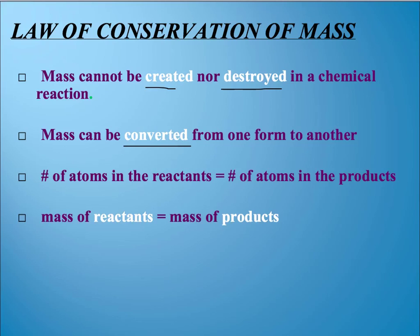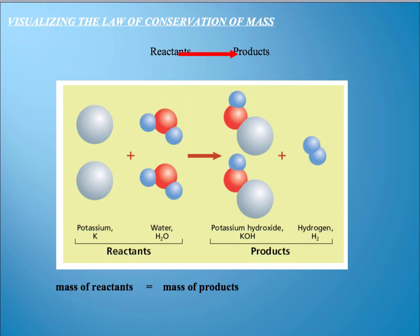And the way you have to do this is add up the number of atoms of each element in the reactants. Remember, reactants means ingredients. And make sure that that's equal to the number of atoms in the products. Remember, the products are what you made, your result. And also, the mass of the reactants, if you were to weigh their mass, that would have to equal the mass of the products. And you'll see that in your lab that we do this week.